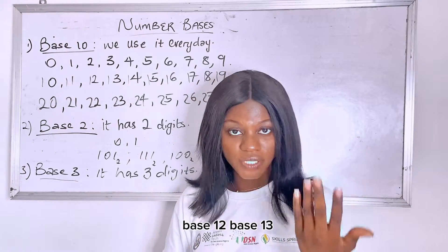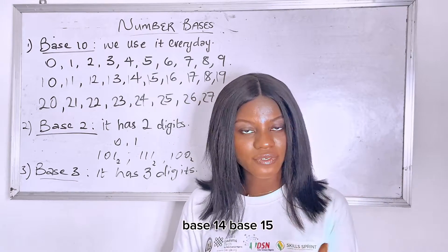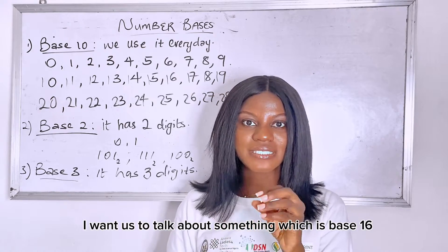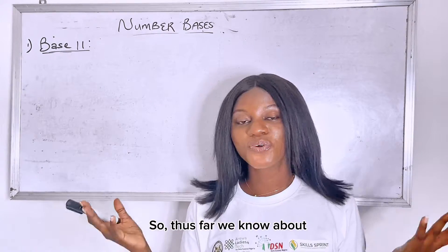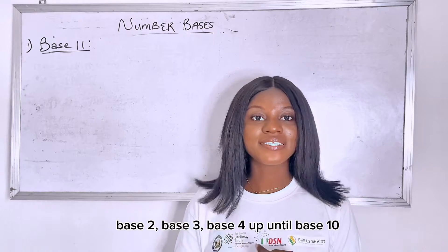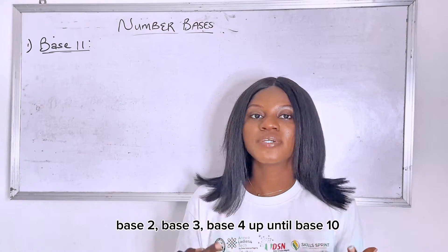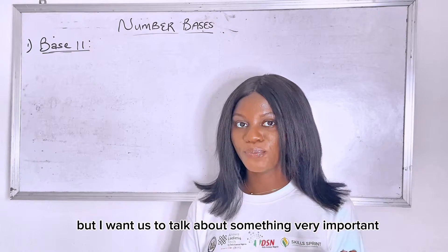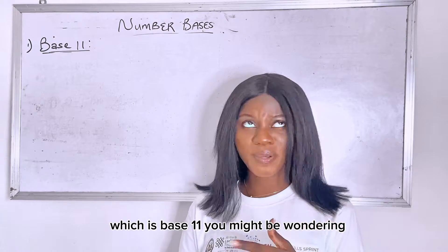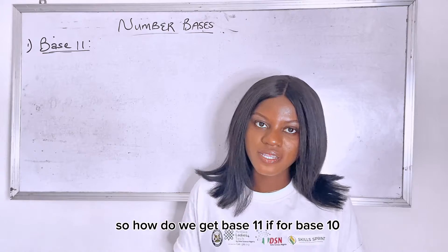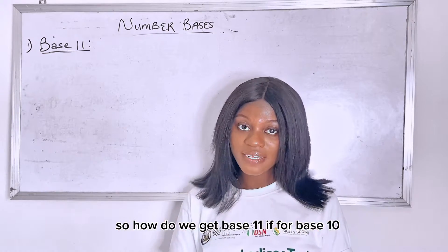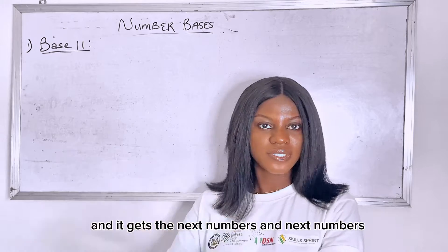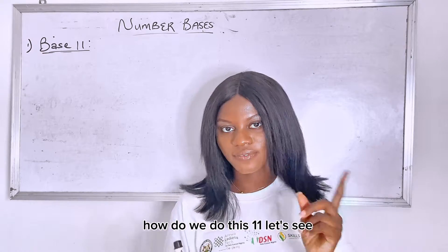Now we also have base 11, base 12, base 13, base 14, base 15. But I want us to talk about something which is base 16. First, we know about base 2, base 3, base 4 up to base 10. But I want us to talk about something very important, which is base 11. You might be wondering, how do we get base 11? If for base 10 we always stop at 9, and it gets the next numbers — how do we do base 11?